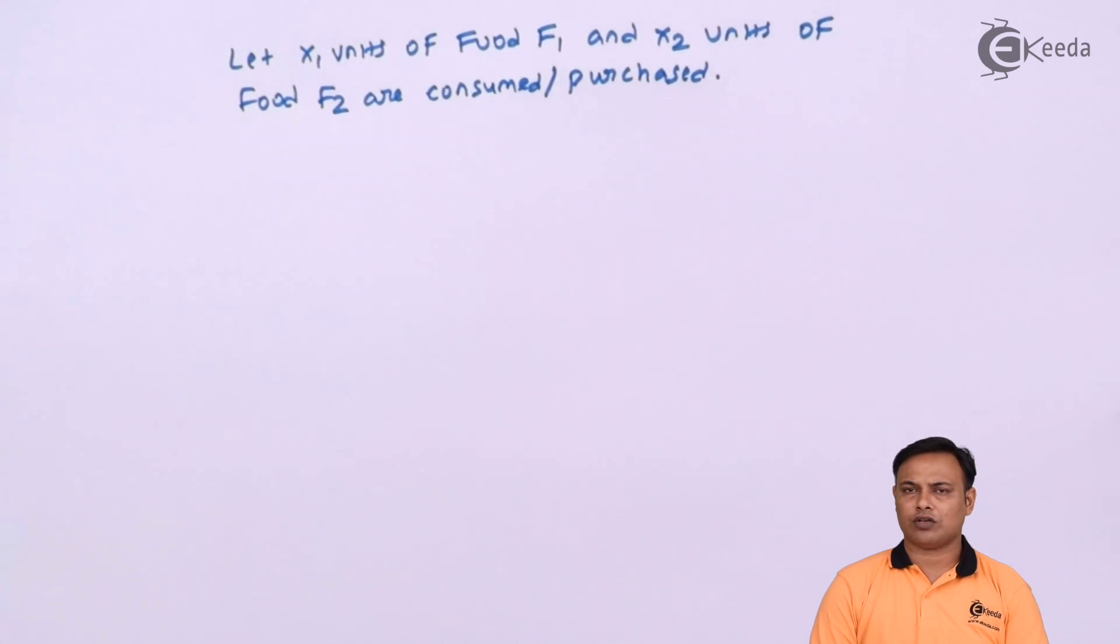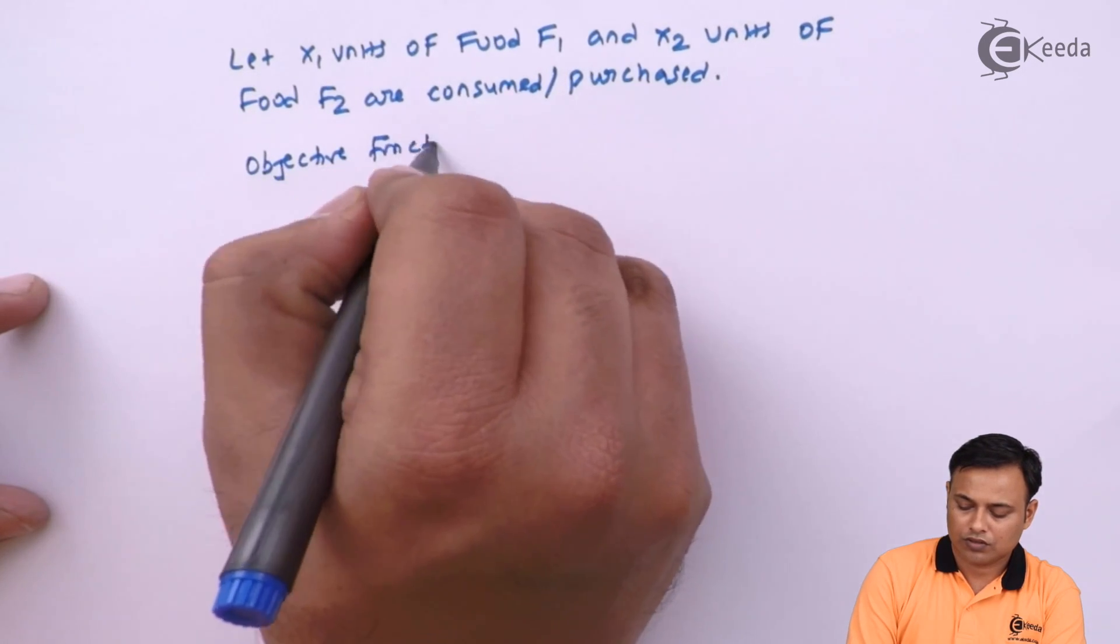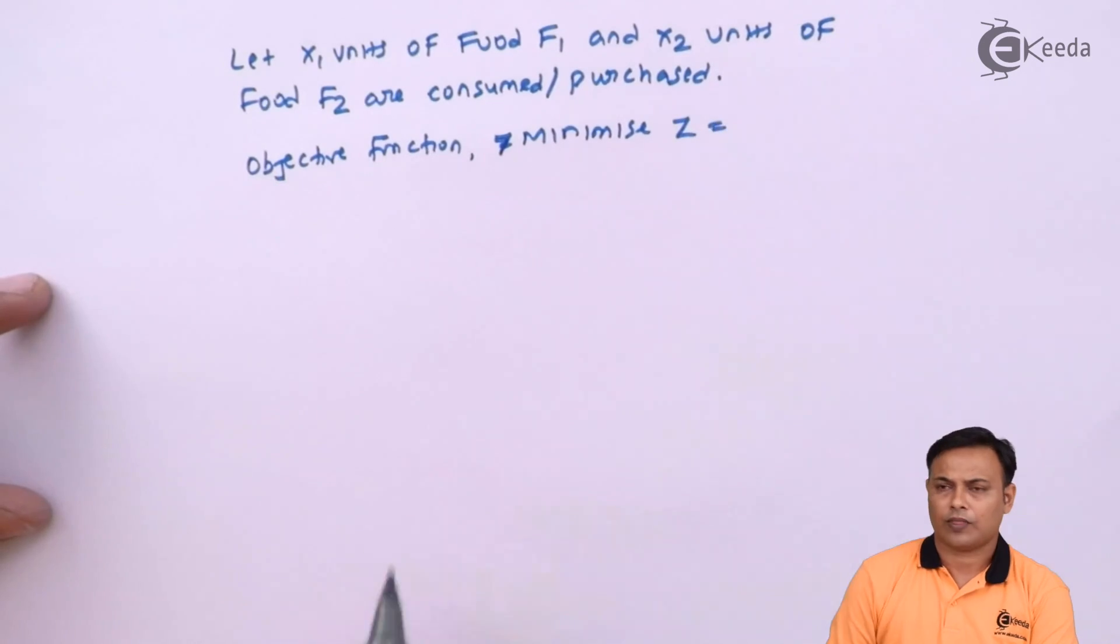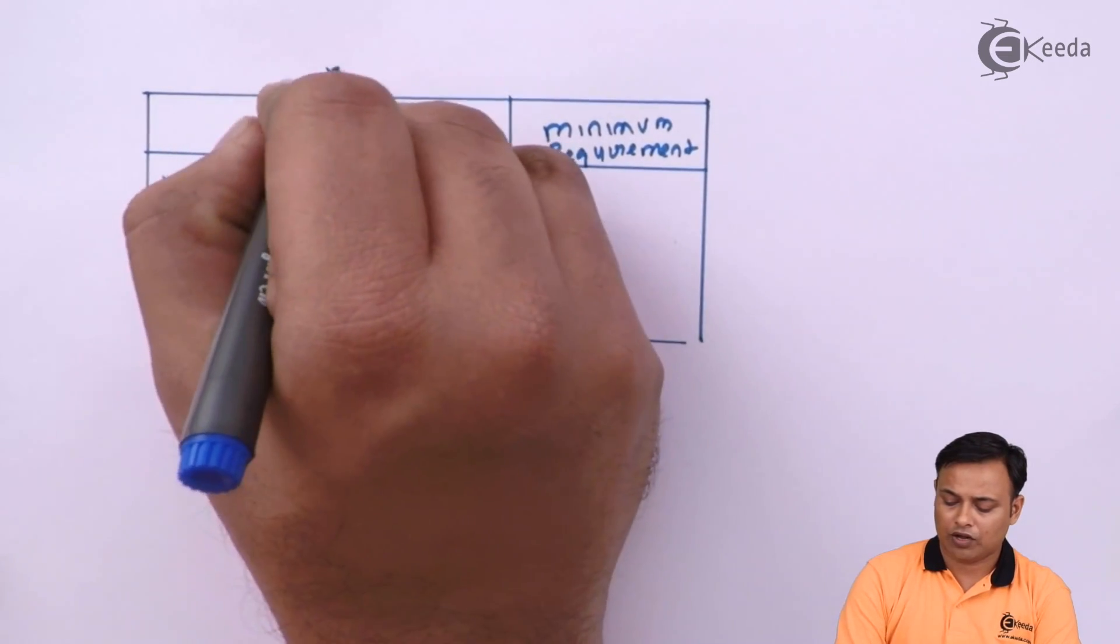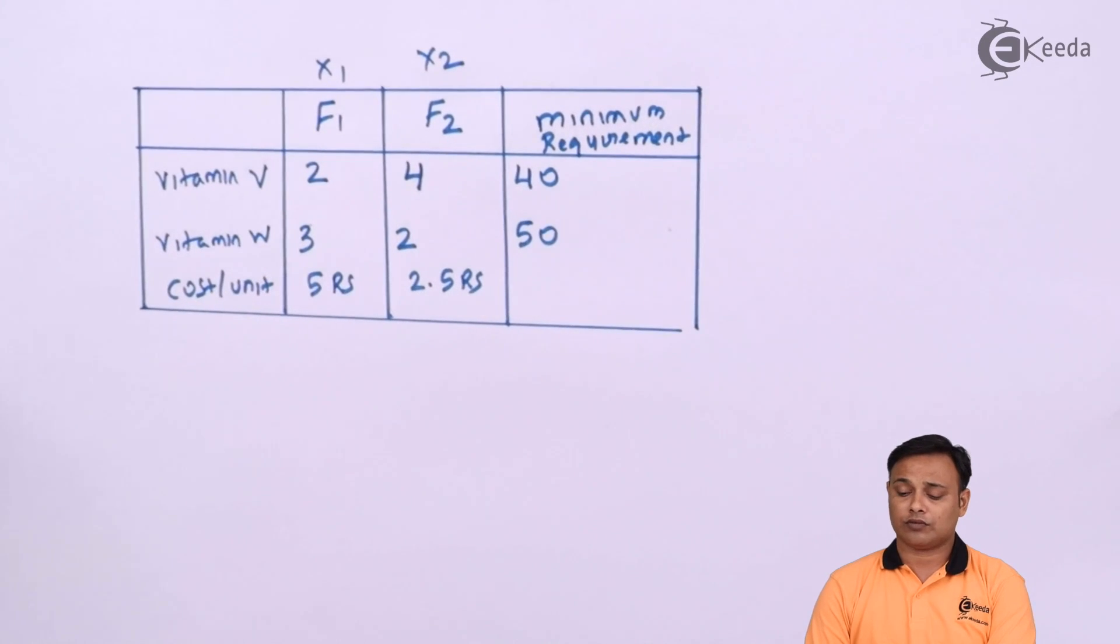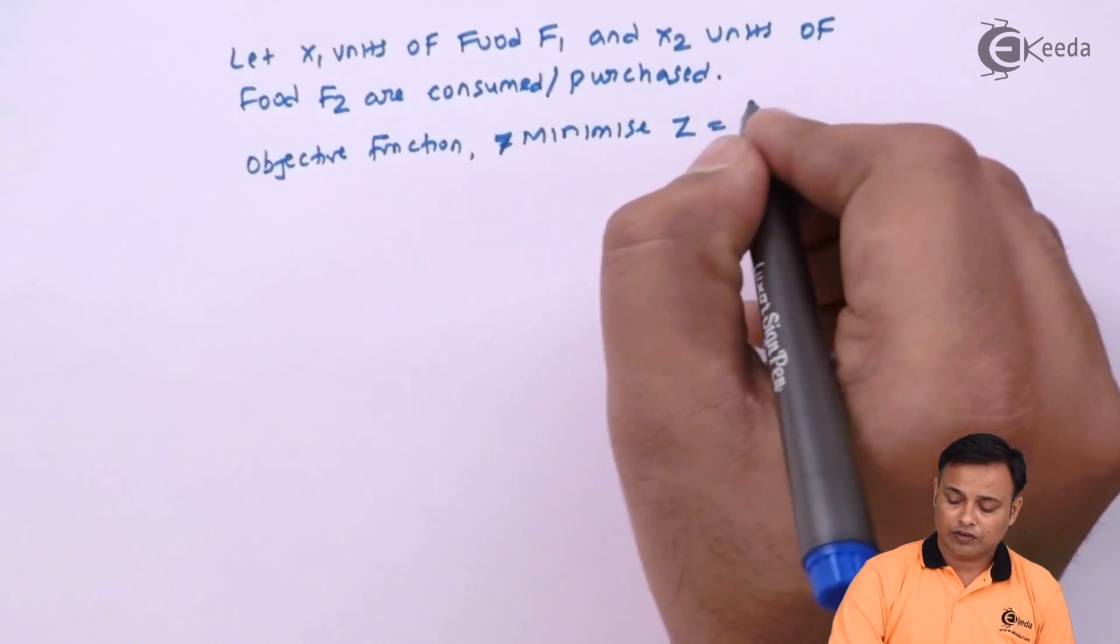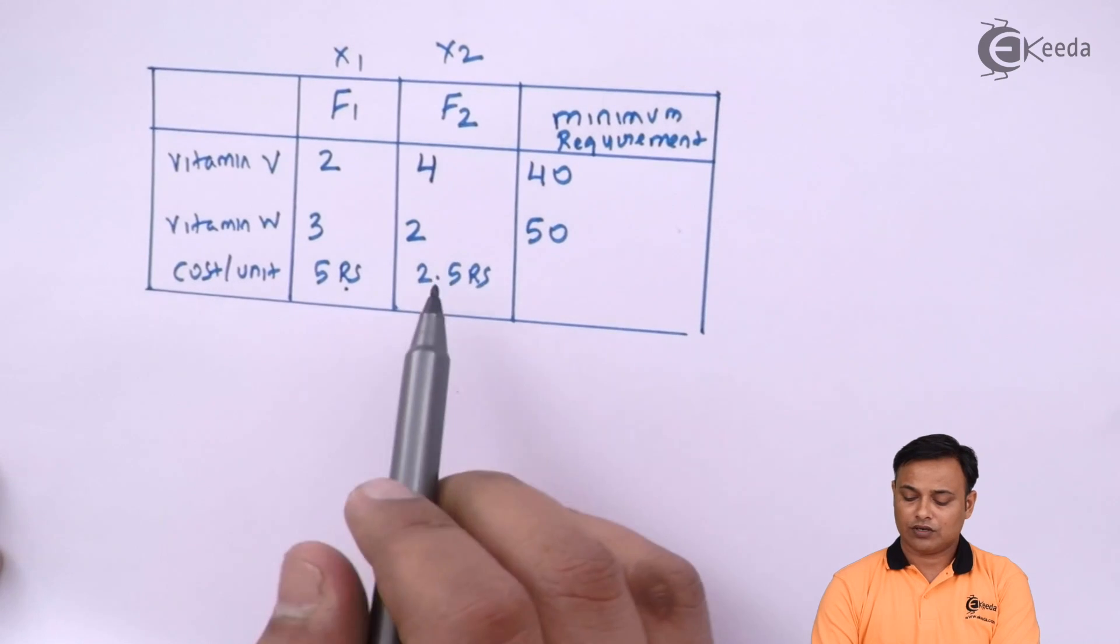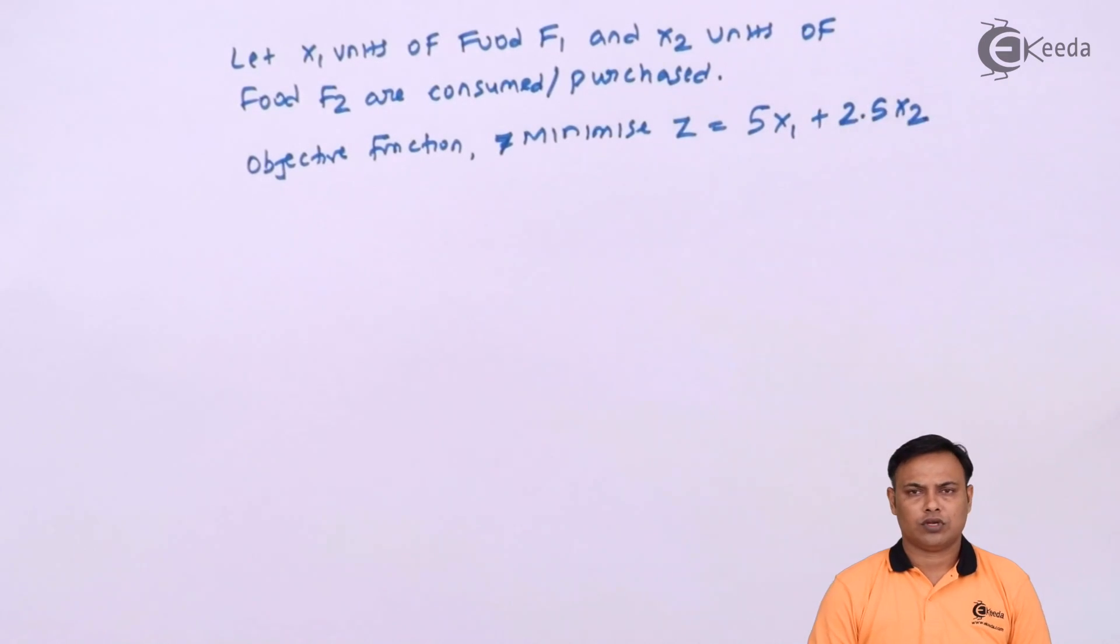Now, objective function is to minimize the cost. So, objective function will be minimize z equals to what shall be my cost. We have made an assumption that we are buying x1 units of food 1 and x2 units of food 2. My cost per unit of food 1 is 5 rupees multiplied by number of units x1. So, it will be 5x1 plus similarly for food 2 it is 2.5 rupees per unit multiplied by number of units x2. So, it shall be 2.5x2.